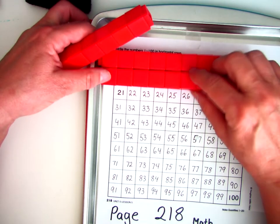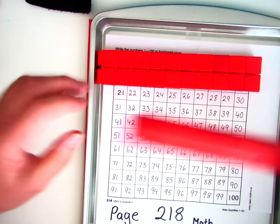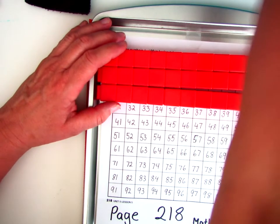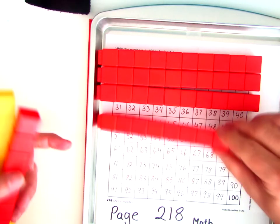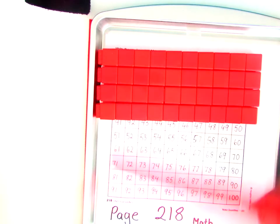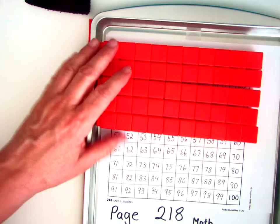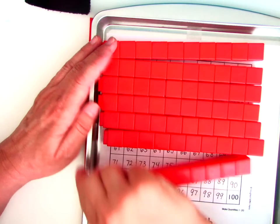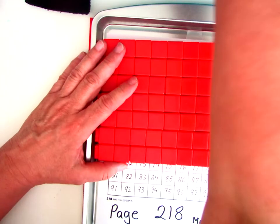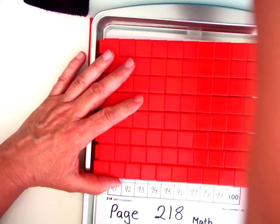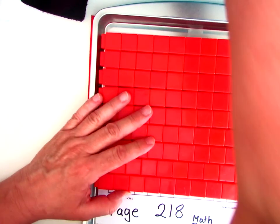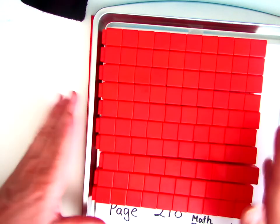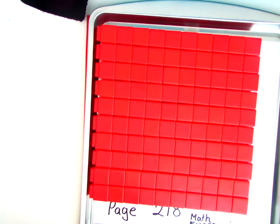10, 20—these are a little bit bigger than the squares we have on the page—10, 20, 30, 40, 50, 60, 70, 80, 90, 100. So this would be our chart in Unifix cubes and let's just do that together one more time.